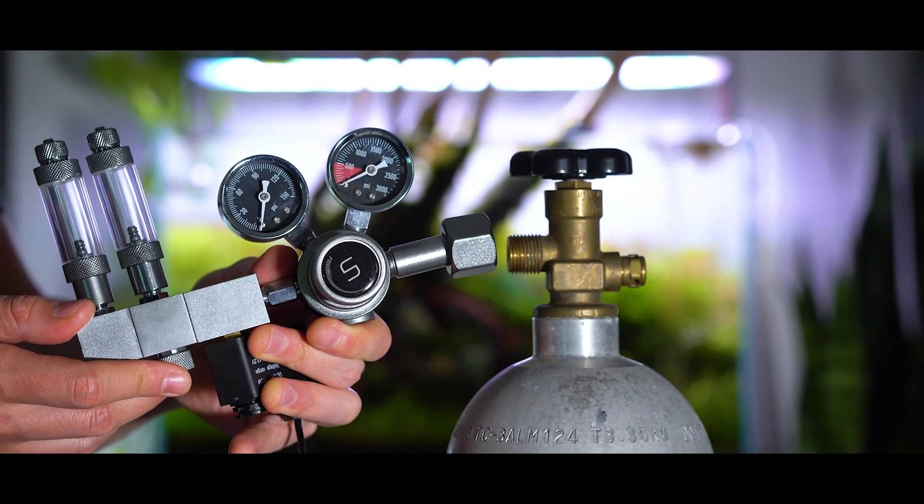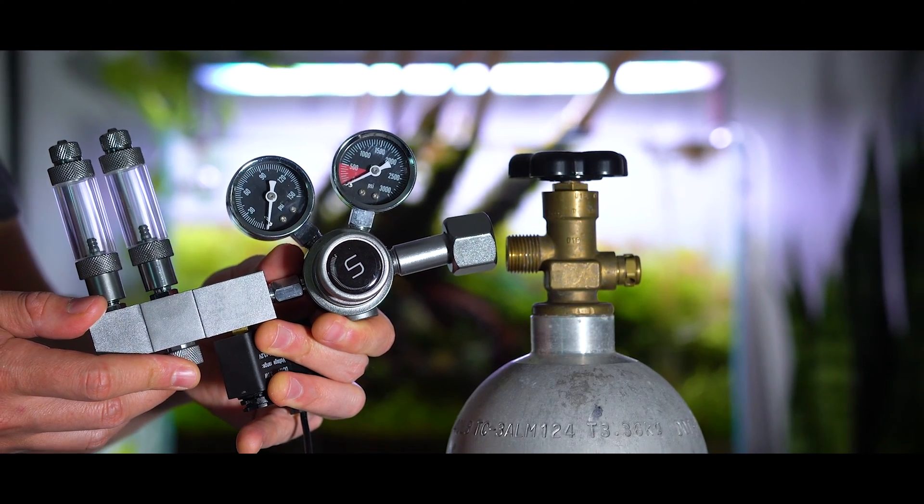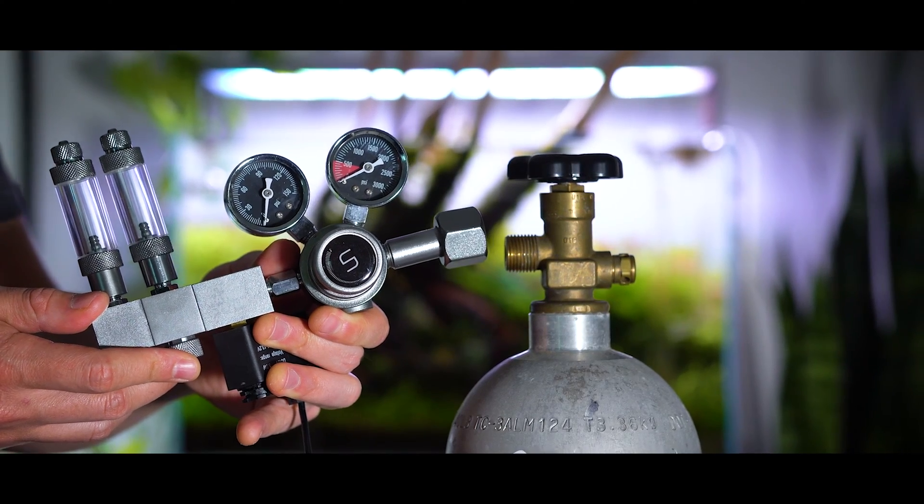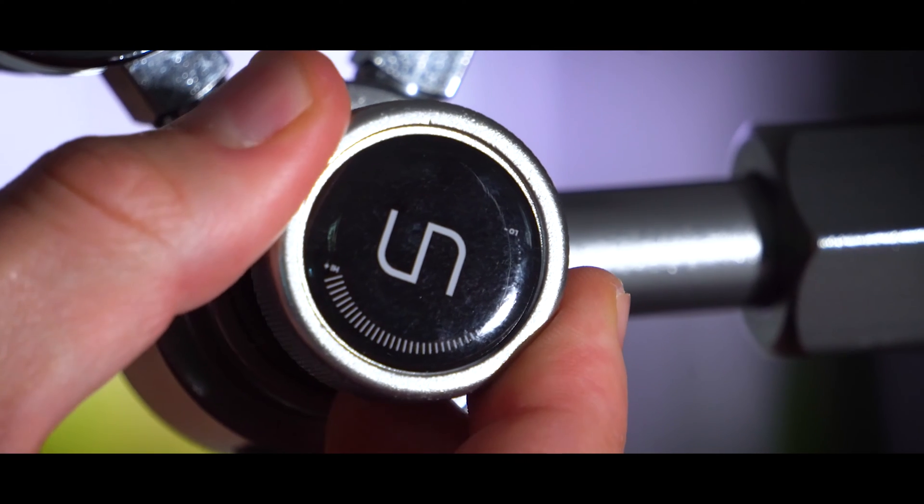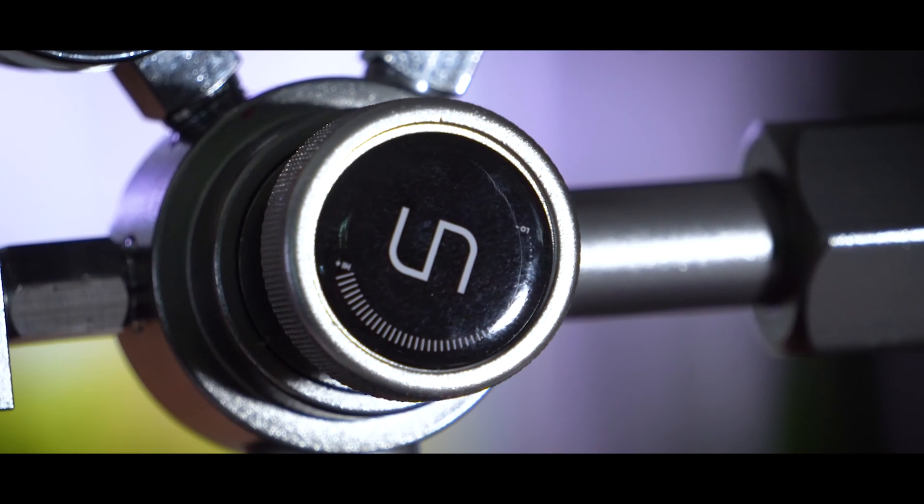Also be sure that the working pressure knob on your regulator is fully closed before attaching it to the CO2 canister. You can do that by adjusting it counterclockwise until the minus sign is all the way closed.